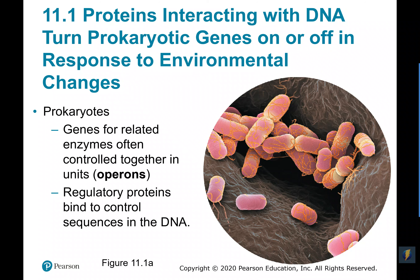This happens even in very simple prokaryotic organisms, like the rod-shaped bacteria shown on screen. Typically, genes in prokaryotic organisms are regulated via what we call an operon, which essentially groups the genes that regulate several related enzymes or traits so they get controlled together. A regulatory protein will bind onto sequences of DNA that are part of the operon, controlling whether or not the other parts get turned on.